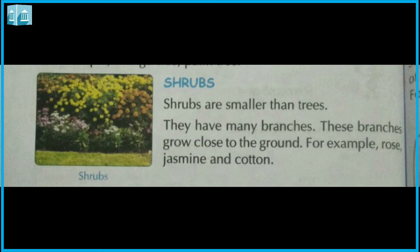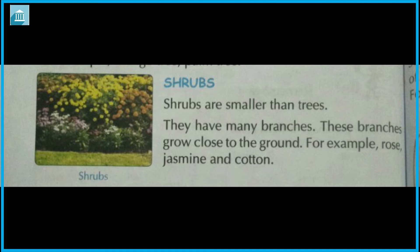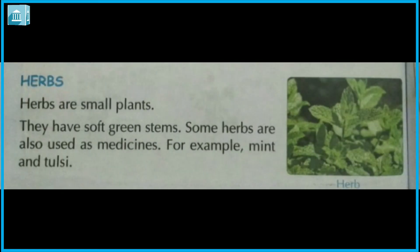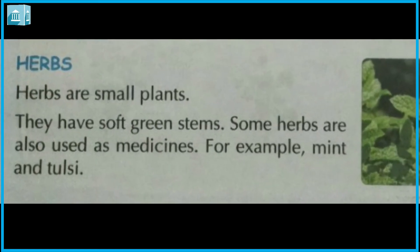Shrubs: Shrubs are smaller than trees. They have many branches. These branches grow close to the ground. For example, rose, jasmine and cotton.